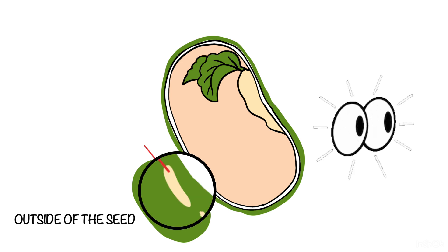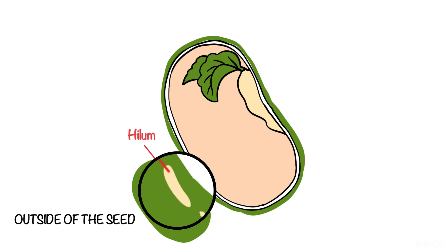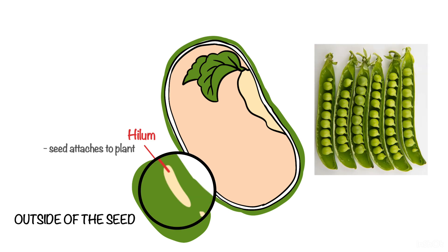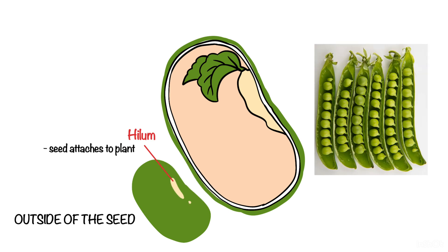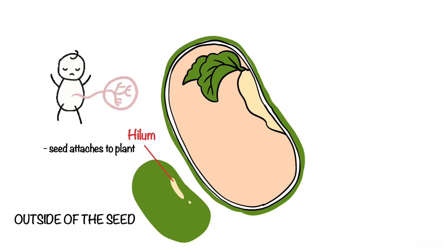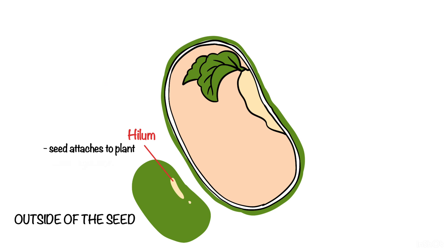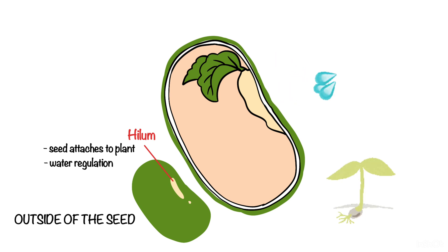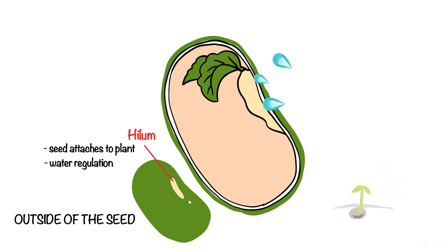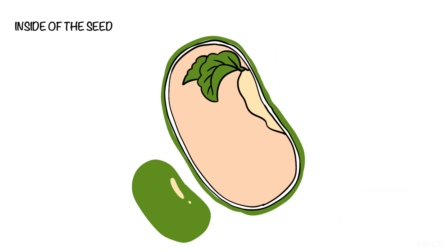Next we have the little eye on the surface of the seed which is called the hilum. This is the point where the seed was originally attached to the plant, equivalent to a belly button in a human being. This opening allows the movement of water into the seed, allowing it to grow.